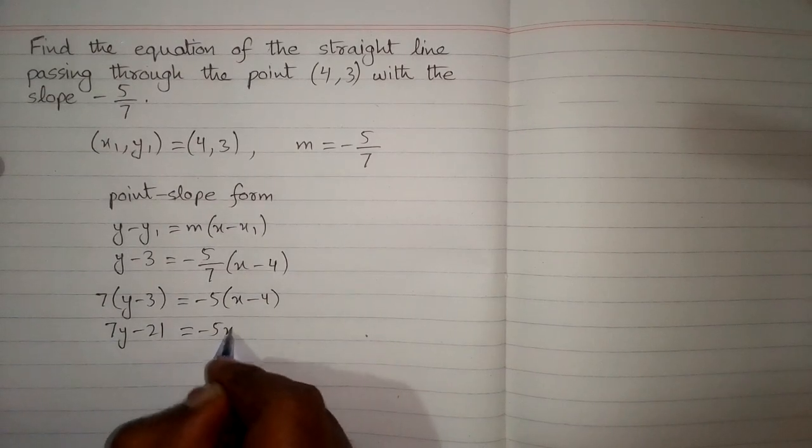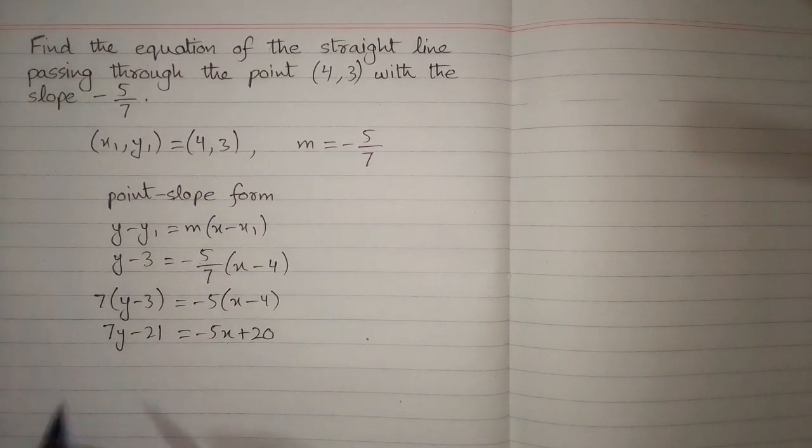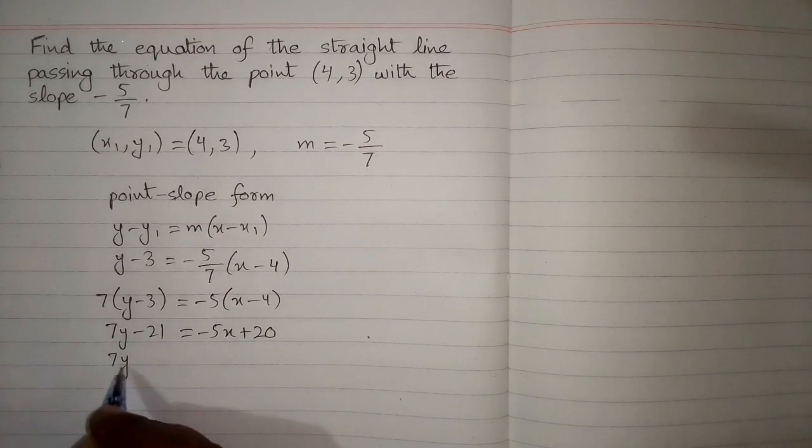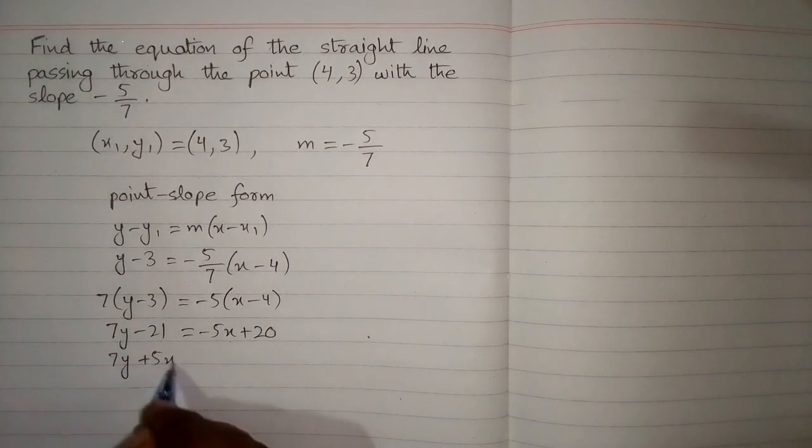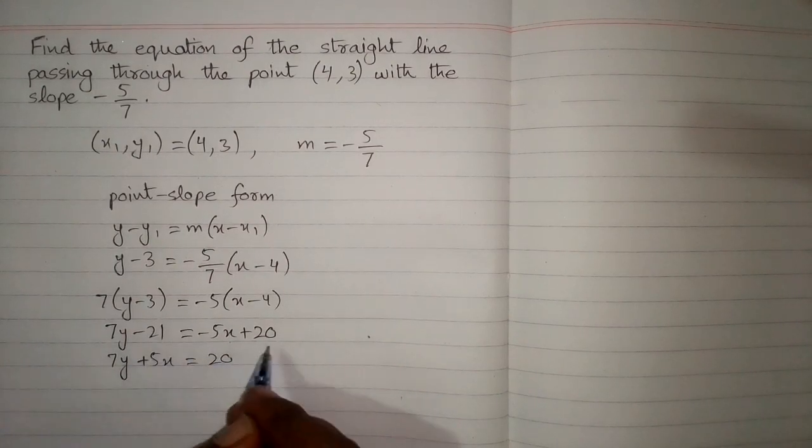Now we can take this -5x on this side of the equation, so we have 7y + 5x, and we can take this -21 on this side of the equation, so it will become +21.